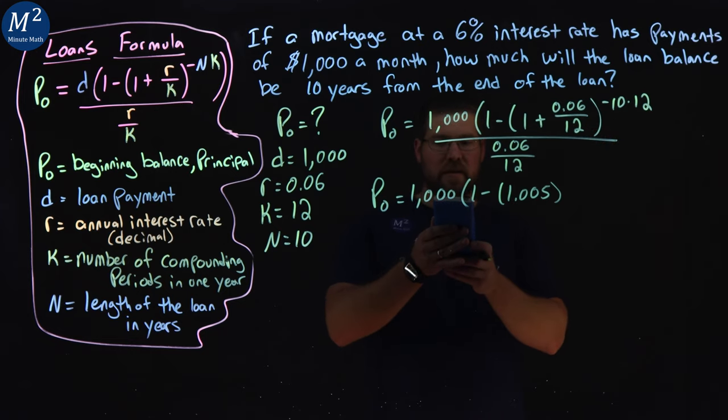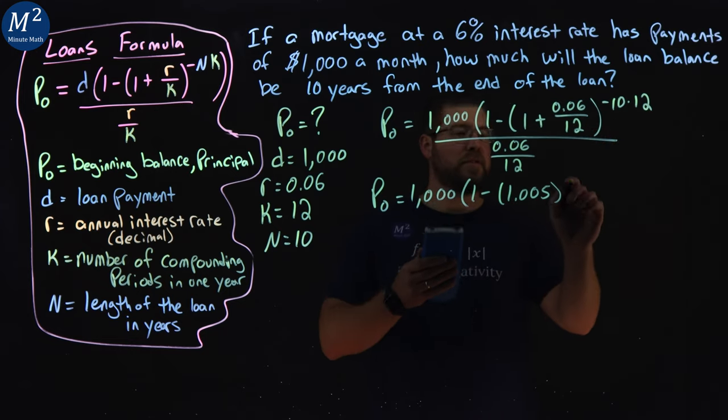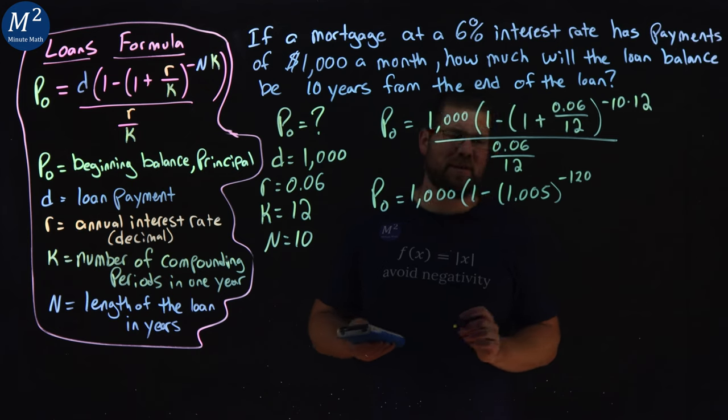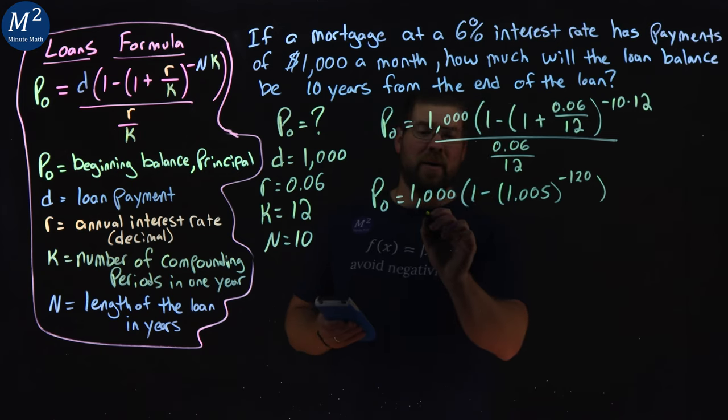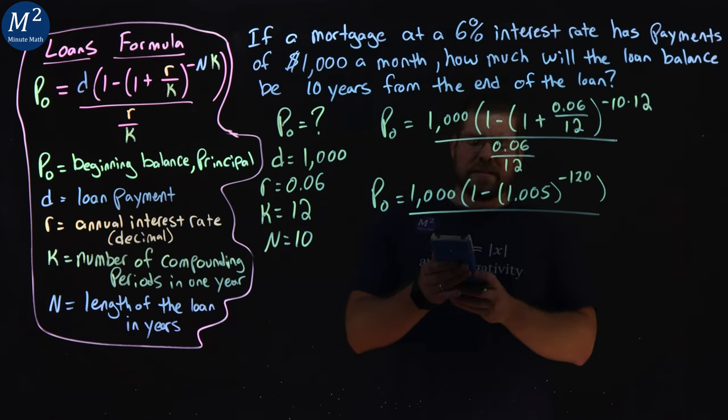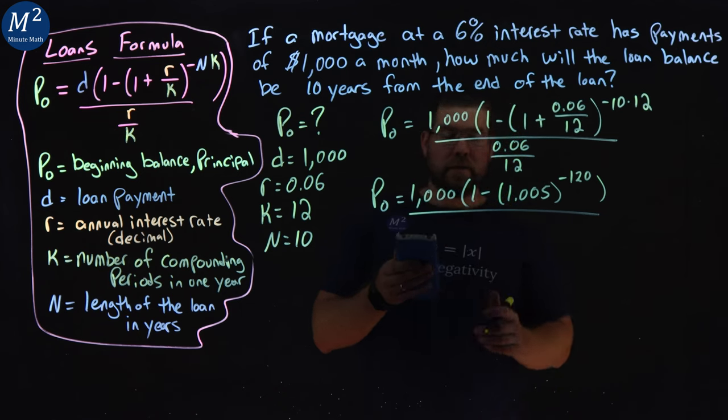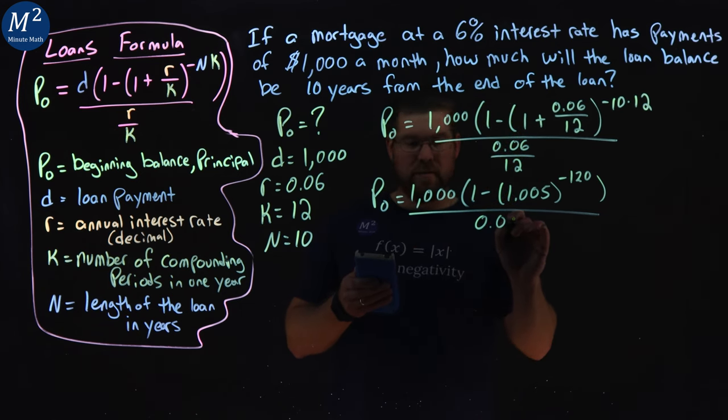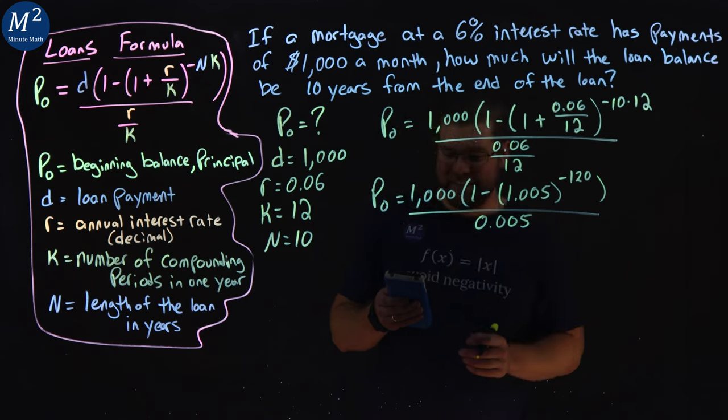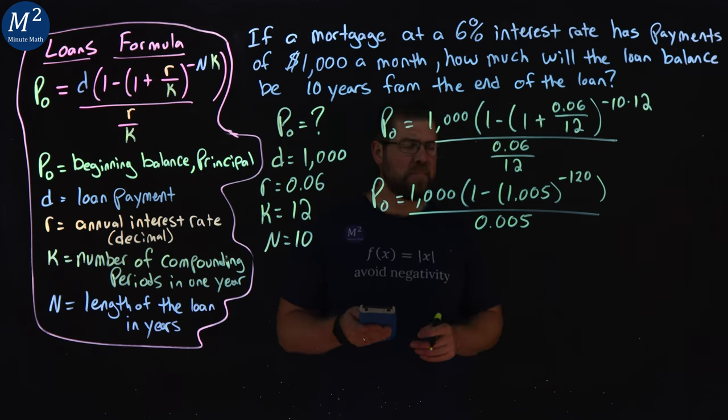We're raising that to a negative 10 times 12 power, which is a negative 120, which I should have been able to do without my calculator. Embarrassing, on camera. 0.06 divided by 12 is 0.005. Don't forget the extra zero there, two zeros.